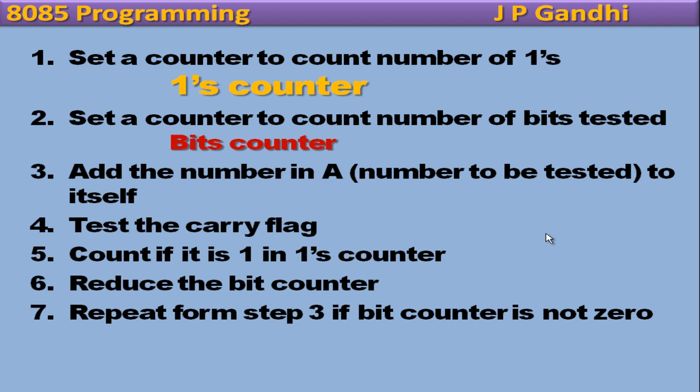So let us see the detailed algorithm of the program. Set a counter to count the number of ones. So take a counter, make its value 0. Whenever you encounter a 1, you increment it. Step 2, set a counter to count the number of bits tested. As we all know that register A is an 8 bit register. And therefore, we have to test 8 bits of the register A. So set a counter to 8 and then after every iteration, reduce that counter value.